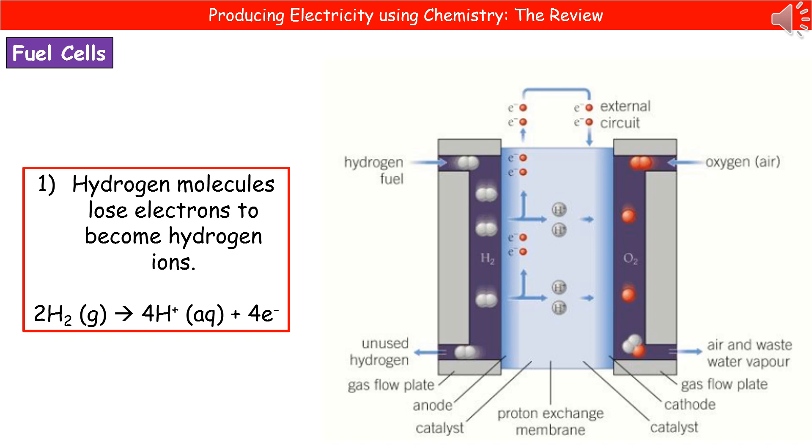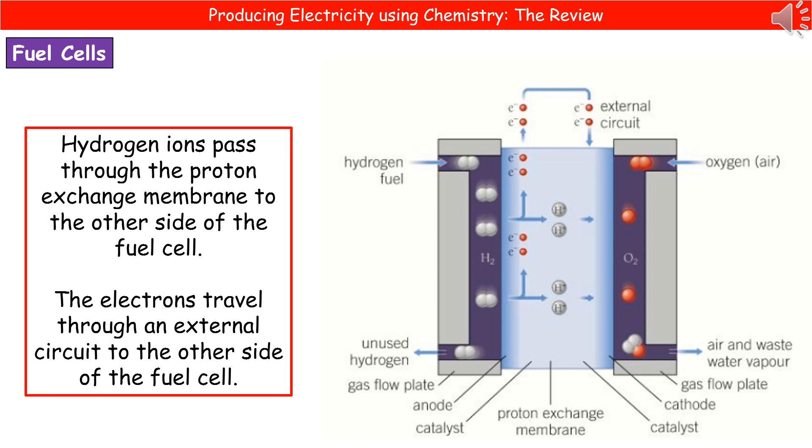I've given you the equation at the bottom there, so we start off with two molecules of our hydrogen gas and then we're going to form four hydrogen ions and four electrons. The hydrogen ions we've just formed are able to pass through the proton exchange membrane because remember a hydrogen ion is also known as a proton, so it's able to move from the left hand side across the proton exchange membrane to the right hand side of the fuel cell.